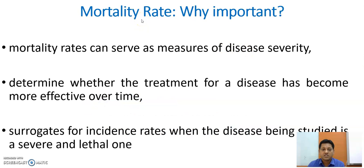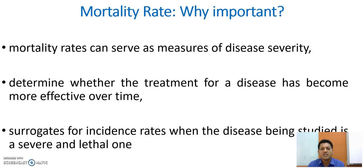It is important to understand why we study the mortality rate. Mortality rate can serve as a measure of disease severity — it indicates whether people living in society or a country are dying due to severely affected disease conditions. For example, this year a lot of people died due to dengue fever, so it is important to study how we can prevent the transmission of the Aedes mosquito and the flavivirus responsible for dengue fever.